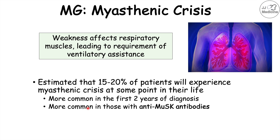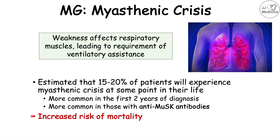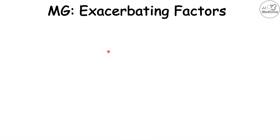A myasthenic crisis is more common in patients who have anti-muscle specific kinase antibodies. Because of the respiratory muscle weakness and requirement for ventilatory assistance, patients who have a myasthenic crisis have an increased risk of mortality. There are also particular exacerbating factors that increase muscle weakness and increase the risk of a myasthenic crisis.